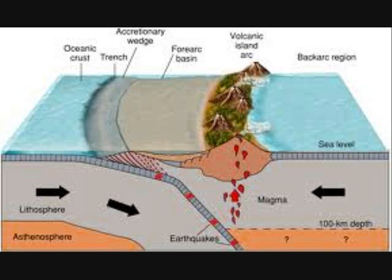When the asthenosphere begins to melt, magma forms. The newly formed magma, which is less dense than the mantle, rises to the surface. Eventually, the magma can reach volcanoes where it will erupt. These types of plate boundaries are commonly found in the Andes in South America and at the boundaries of the Nazca plate.